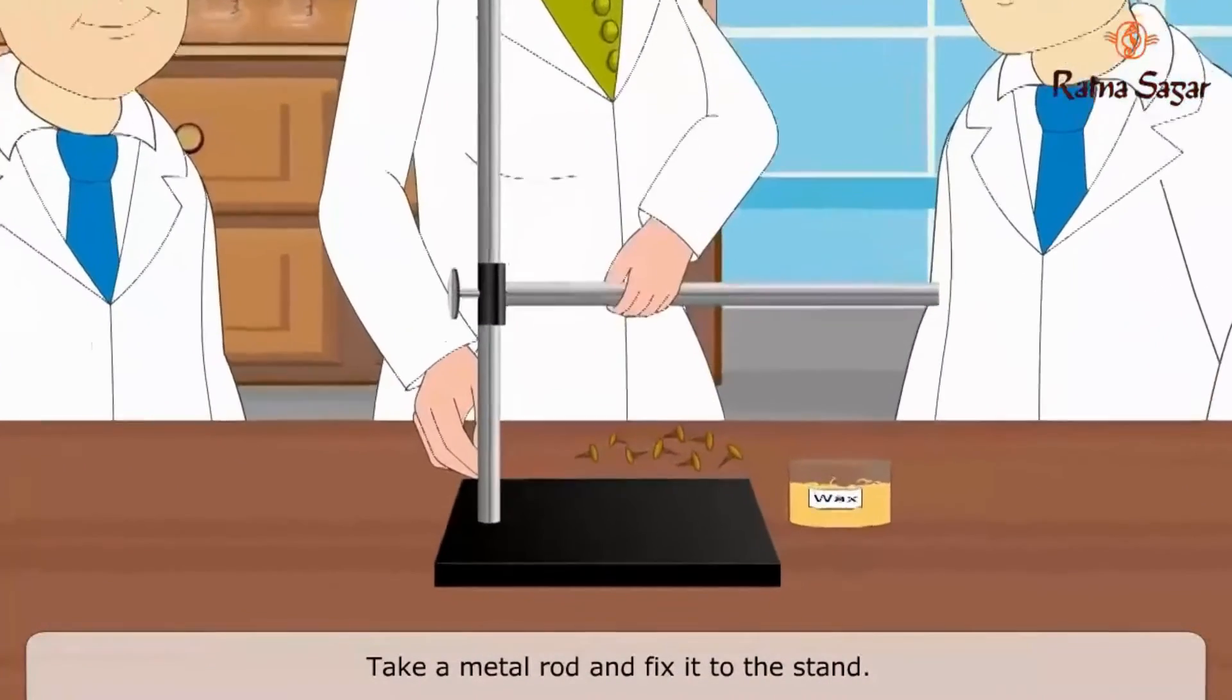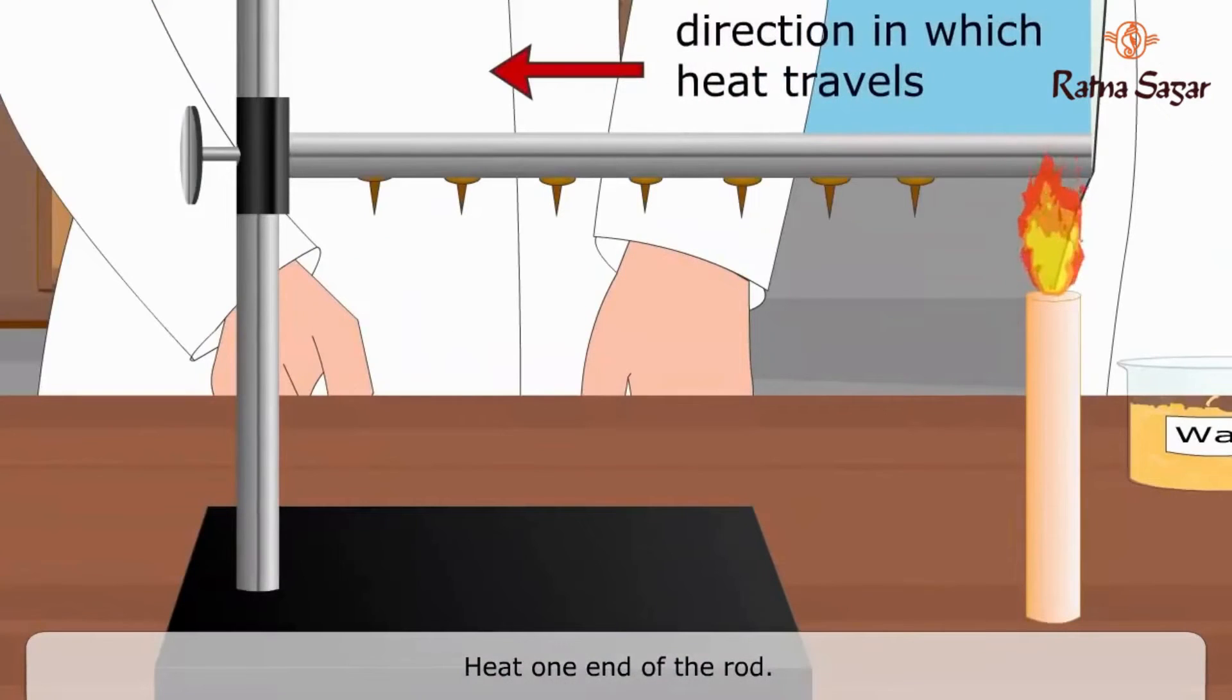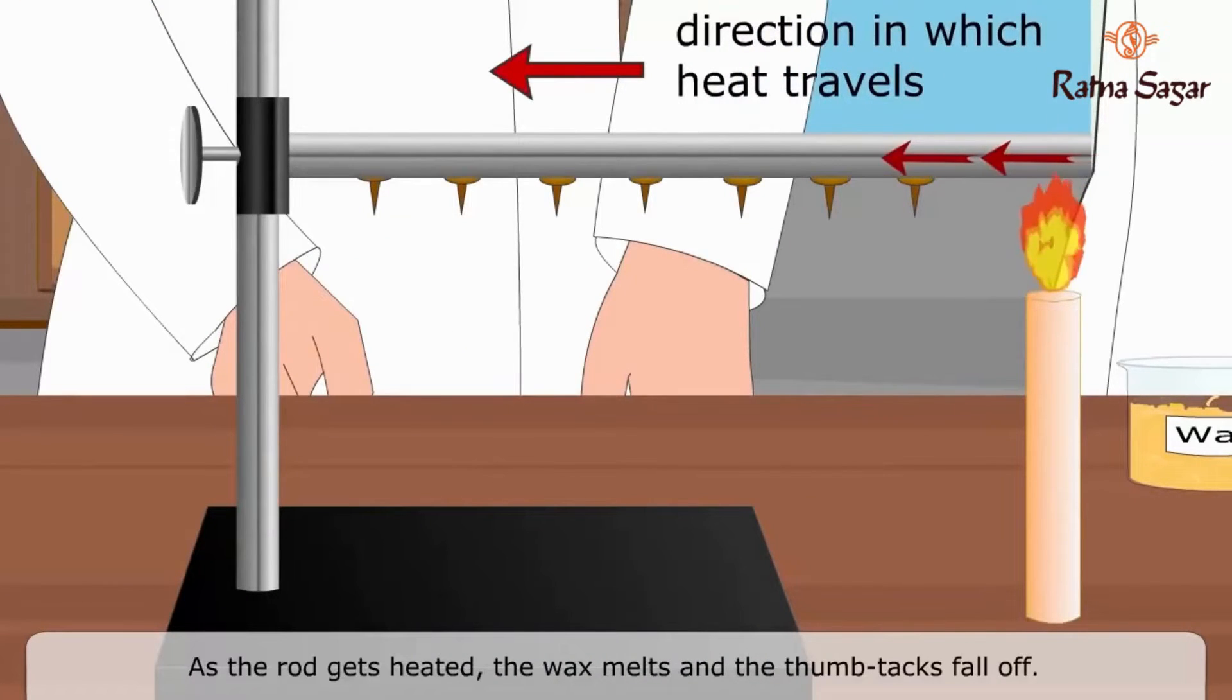Take a metal rod and fix it to the stand. Fix thumbtacks along the length of the rod using wax. Heat one end of the rod. As the rod gets heated, the wax melts and the thumbtacks fall off.